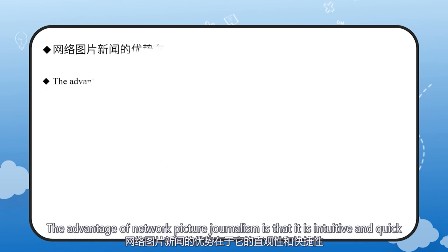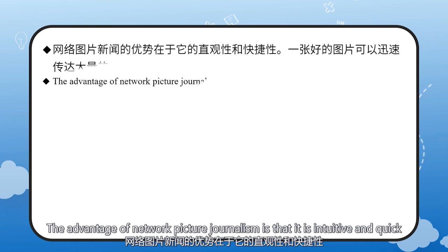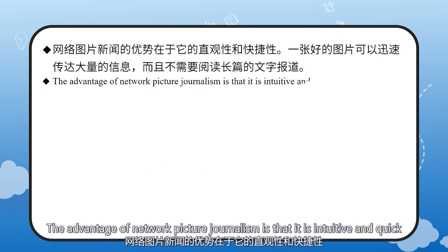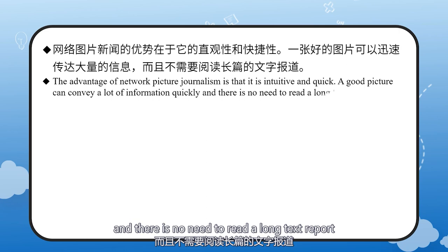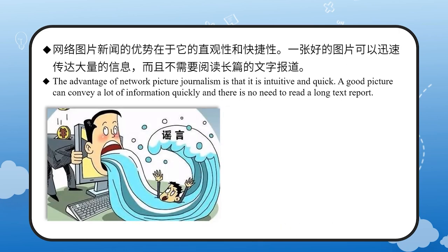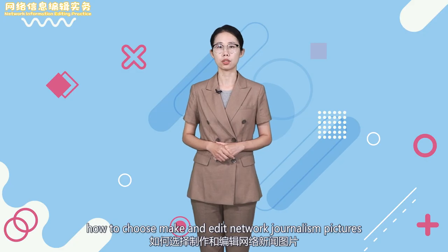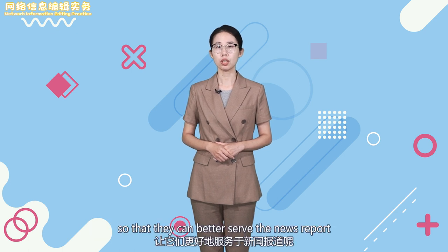The advantage of network picture journalism is that it is intuitive and quick. A good picture can convey a lot of information quickly and there is no need to read a long text report. So, how do we choose, make, and edit network journalism pictures so that they can better serve the news report?